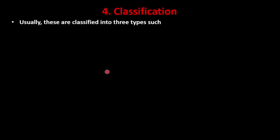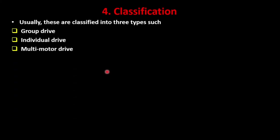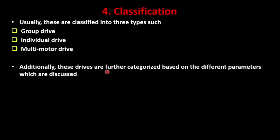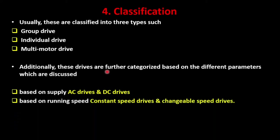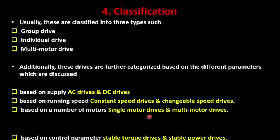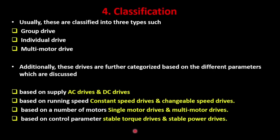Now coming to the classification of electrical drives. Basically, we classify them as group drive, individual drive, and multi-motor drive. Apart from this, we can split into further categories based on different parameters: based on supply — AC drives and DC drives; based on running speed — constant drives and changeable speed drives; based on number of motors — single motor and multi-motor drive; based on control parameter — stable torque drives and stable power drives. The three important ones we will discuss are group drive, individual drive, and multi-motor drive.